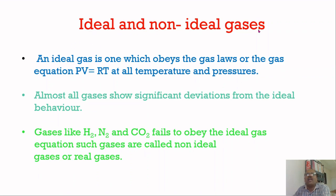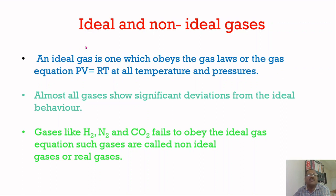Now we have to see ideal and non-ideal gases. An ideal gas is one which obeys the gas laws or the gas equation PV = RT at all temperatures and pressures. We can say a given gas is an ideal gas whenever it is obeying the gas laws or the gas equation PV = RT at all temperatures and pressures.